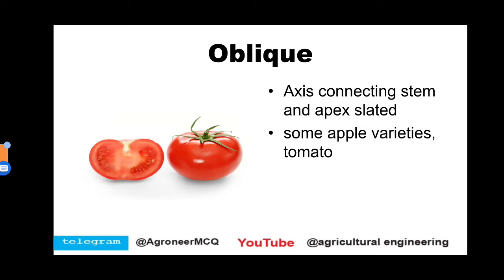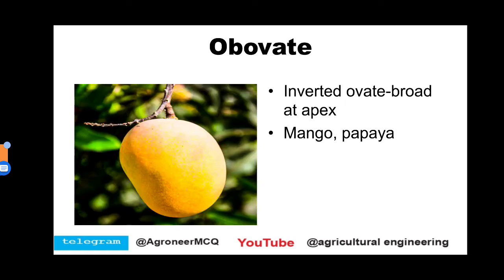In oblique shape, the axis connecting stem and apex are slanted. Tomato and some apple varieties belong to oblique shape. Obovate shape is the inverted oblique shape, which is broad at the apex end. Examples of obovate shape are mango and papaya.